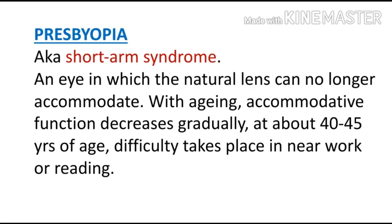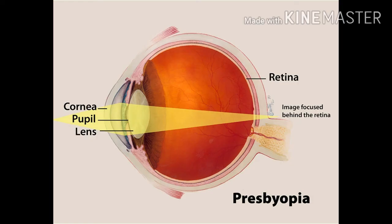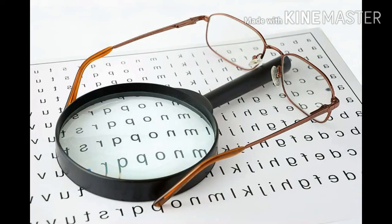Next is presbyopia, also known as short arm syndrome — a condition in which the natural lens can no longer accommodate. With aging, accommodative function decreases gradually, typically around 40 to 45 years of age, and difficulty takes place in near work or reading. The natural lens slowly loses its accommodation power; as seen in the diagram, light cannot properly focus on the retina. The patient faces difficulty in near work such as reading and writing. Correction is with bifocal lenses that contain both distance and near vision components.